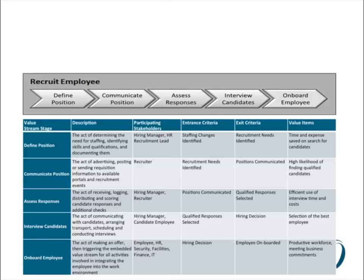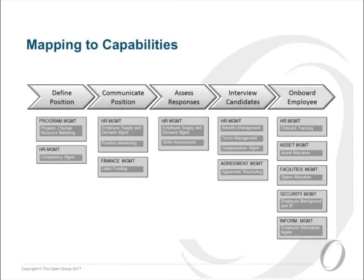Recruit employee: the hiring manager triggers the need for employees. You see the stages: defining the position, communicating that position, assessing responses from interested parties, interviewing the candidates, and then onboarding the employee. You see the definition for each of those stages, the specific key participating stakeholders in that stage, entrance criteria, exit criteria, and then the value items. The value items in this case are still about that triggering stakeholder — the value to the hiring manager who, at the end of the day, just wants to end up with the right employee to do the right work. So: time and expense saved on search for candidates, efficient interview process, selecting the best qualified employee, and at the end, a productive workforce meeting business commitments.